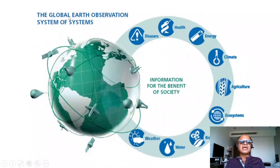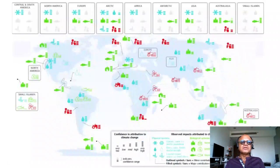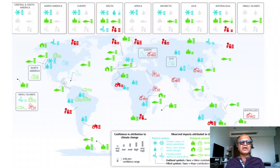GEOS is a program engaged globally in observing the Earth system for disasters, health, energy, climate, agriculture, ecosystem, biodiversity, water, and weather. There are other details involved, like shorter timescale El Niño prediction systems in the tropics, volunteer observing ships, and long-term observations with floats in the ocean that go up and down. All that information, including ecological parameters from satellites, is used to make observational maps.